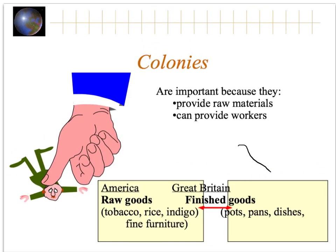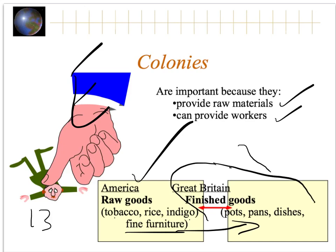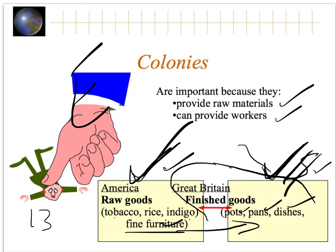So here we have England and the 13 colonies with the Atlantic Ocean in the middle. The colonies are important because they provide raw materials — all the crops, fur, and lumber — and they also provide workers. They provide raw goods like tobacco, rice, and indigo. Over here in Great Britain, they have the finished goods. They turn the raw materials into pots and pans, dishes, and fine furniture. Then they turn around and sell that stuff for a profit. England takes raw goods from America, makes them into the final product, and gets to sell it for more money — because you're going to pay more for the end product than for the raw goods.